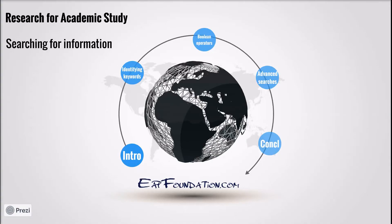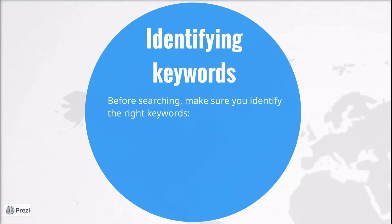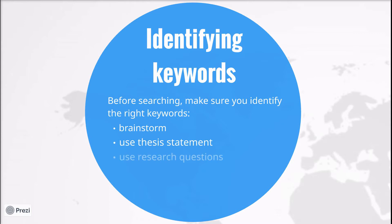Obviously, before you begin searching, you need to make sure you are identifying the right kind of keywords that will get the kind of information that you need. One way to do this is to brainstorm for keywords. Just like when you're brainstorming as part of the writing process, you'll want to get as many words and ideas as possible and then choose the best ones for your search. A second way to identify keywords is to use the thesis statement if you've already written one. So if you have a thesis statement already, look at it and pull out the main words and use these in your search. If you need to develop research questions as part of your research, then try to identify keywords from those and use them in your search.